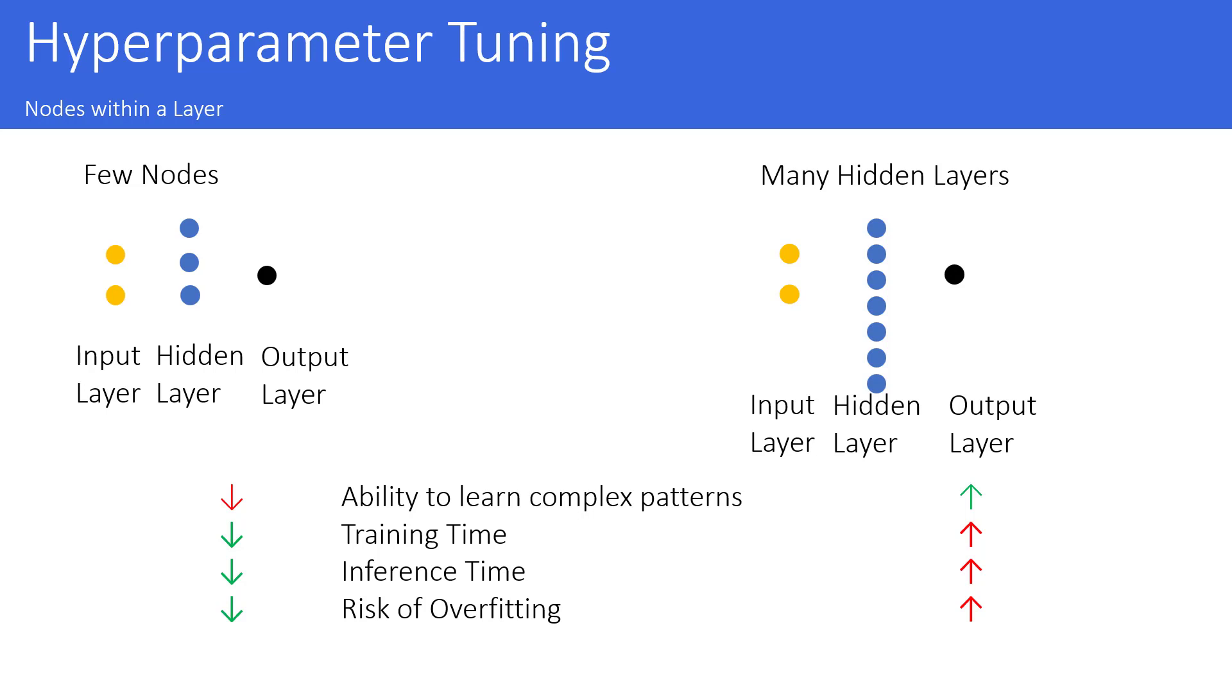This first point and the last point, these are always creating some tension. Because if your model is too simple for the problem, then it's not able to learn the complex patterns. But the opposite might be that your model is too complex for the problem and then you are risking to get overfitting.